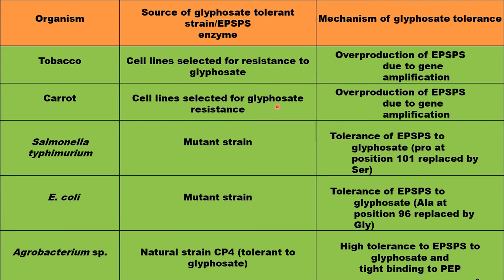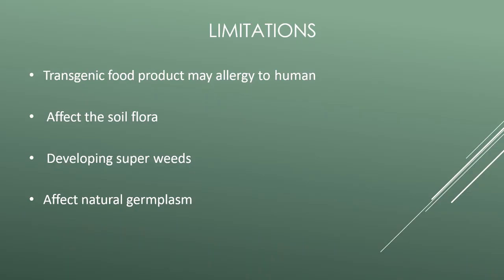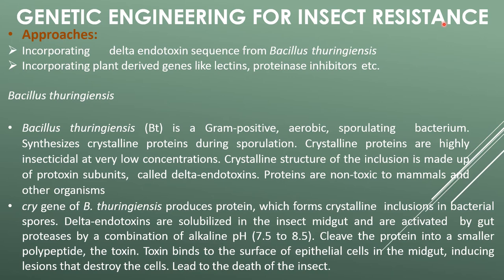In the case of carrot, the source of glyphosate tolerance is a cell line selected for glyphosate resistance. The mechanism of glyphosate tolerance is overproduction of EPSPS due to gene amplification. Limitations of transgenic plants include: the transgenic food product may cause allergies in humans, affect soil flora, lead to development of super weeds, and affect natural germplasm.